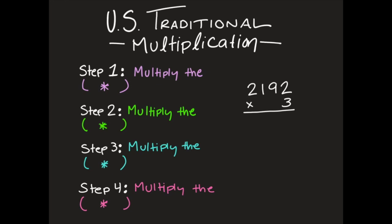So the first thing we're going to do is write down our steps and then practice with this problem over here that is to the right. So the first thing we're going to do is multiply the ones. When I go to multiply the ones, I'm starting with my three, and then my ones in my top problem here is a two. So I'm going to write that down.